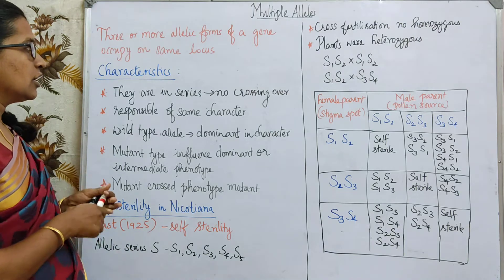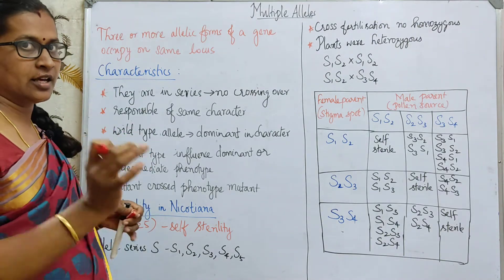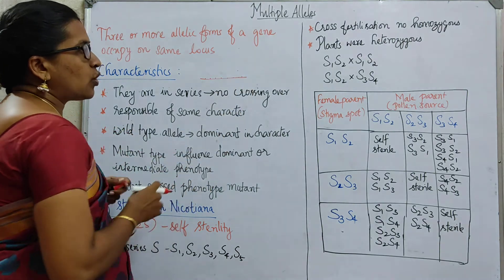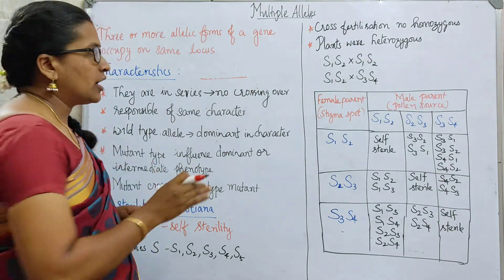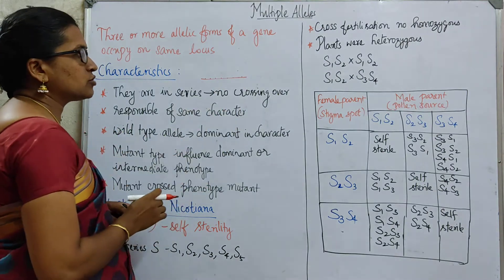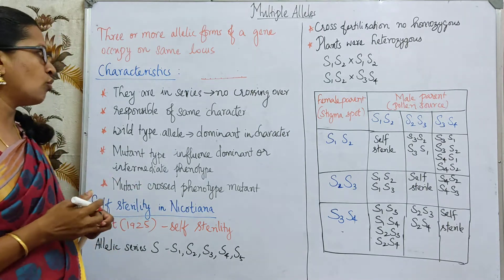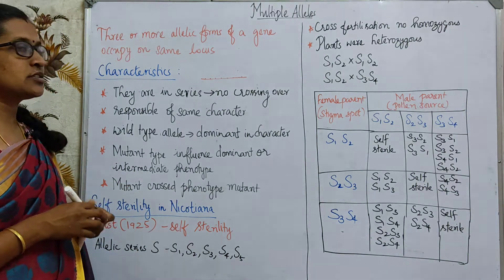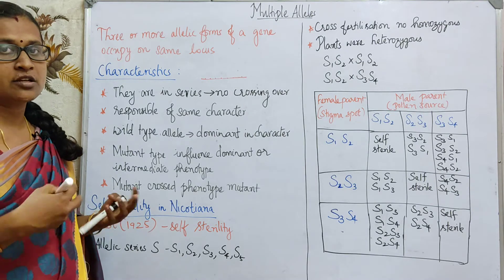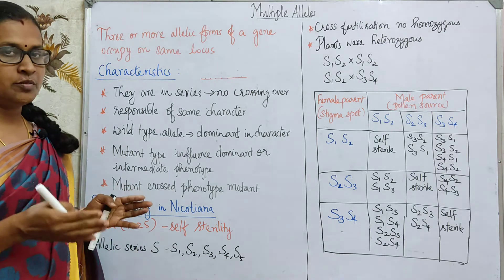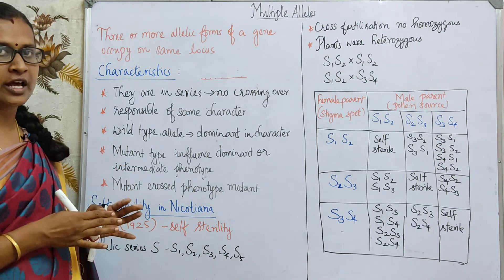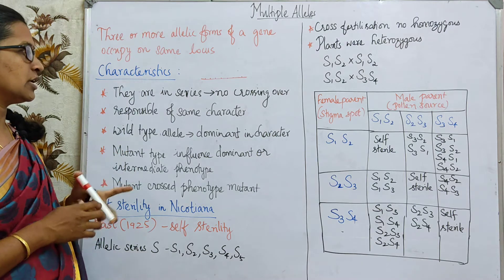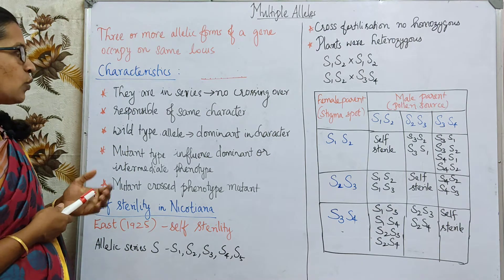A key characteristic of multiple alleles is that they are arranged in a series — in a line. Because they occupy the same locus and are arranged in a line, there is no crossing over, meaning no overlapping. As a result, the same characters are passed to the next generation; the characters remain the same and are responsible for transferring to the next generation.